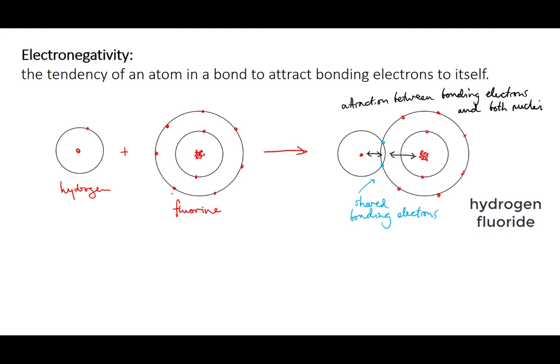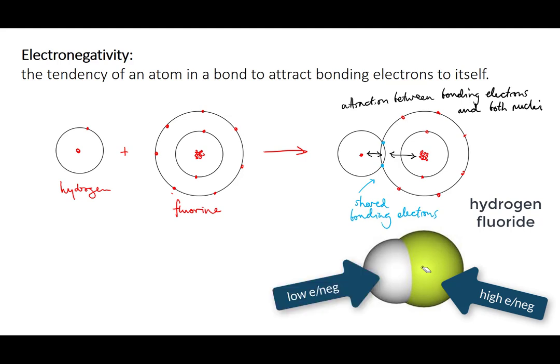This hydrogen fluoride molecule has two bonding electrons that hold the atoms together. The fluorine atom has significantly higher electronegativity than the hydrogen, and that means that those two bonding electrons spend more time close to the fluorine atom than they do to the hydrogen.